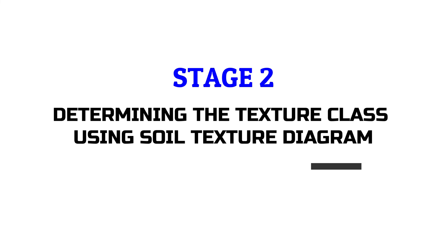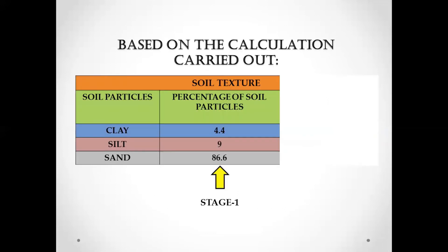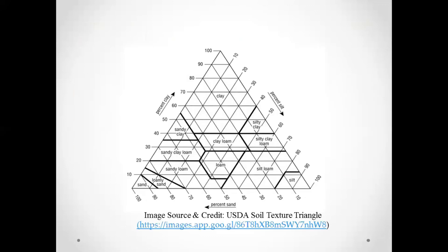Now we move on to the second stage: determination of the texture class of the soil sample using the soil texture diagram. From this diagram we will be able to determine exactly which texture class the soil sample belongs to, based on the percentages of clay (4.4%), silt (9%), and sand (86.6%) calculated earlier.